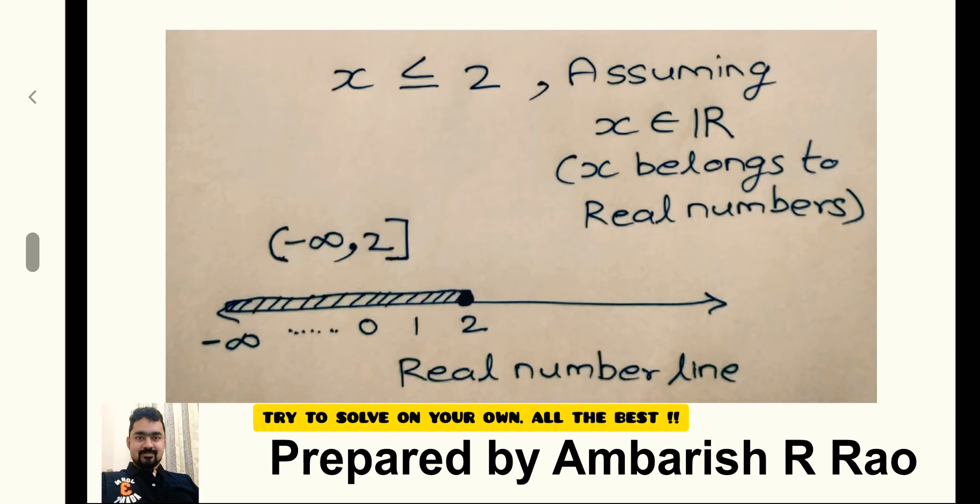We cannot include minus infinity so we have used a different bracket, and for 2 we have used a square bracket so that we can include 2 also.